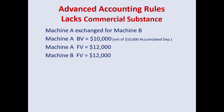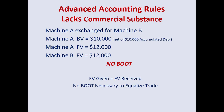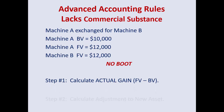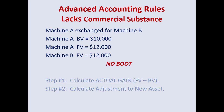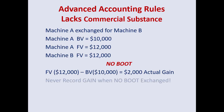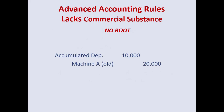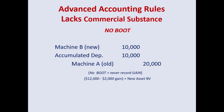If we look at an exchange of equal value — no boot, lacking commercial substance — fair value given equals fair value received, so no boot is necessary to equalize the trade. Is there a gain or a loss? There is a $2,000 gain, but you are not allowed to record it if no boot is exchanged. Taking the old asset off the books, Machine B has a fair value of $12,000, but it must go on the books at $10,000 because you cannot record a gain when the exchange lacks commercial substance.